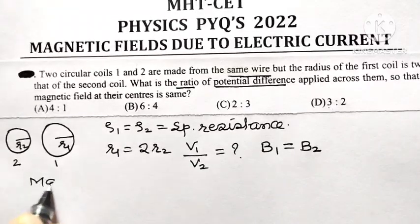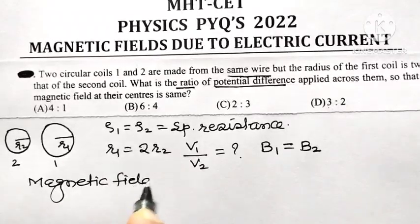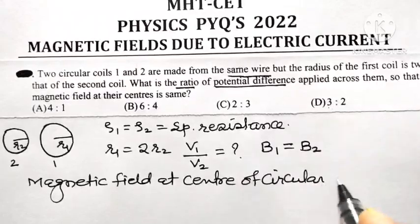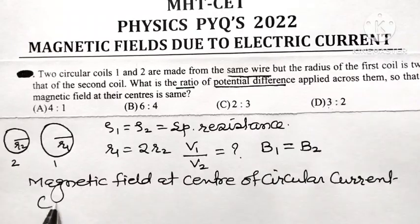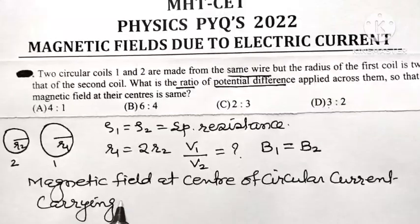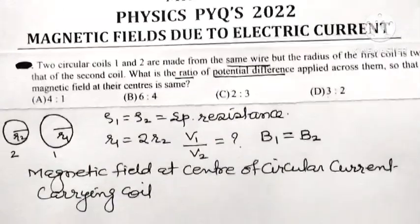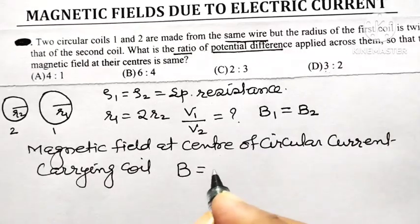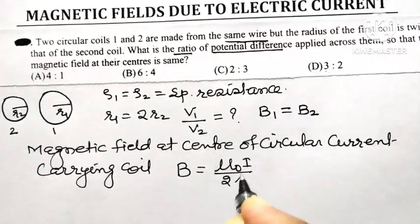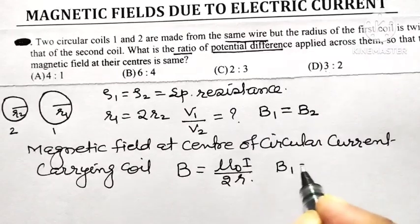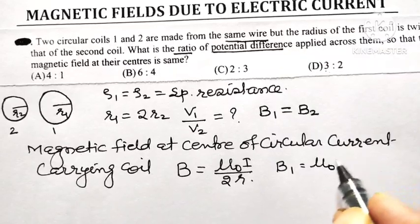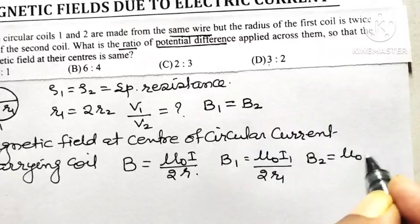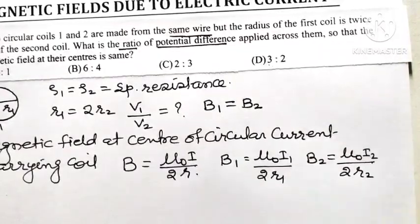We know that the magnetic field at the center of a circular current-carrying coil — because any current-carrying coil produces a magnetic field at its center — the formula is B = μ₀I / 2R. Therefore, the magnetic field at the center of the first coil is μ₀I1 / 2R1, and the magnetic field at the center of the second coil is μ₀I2 / 2R2.